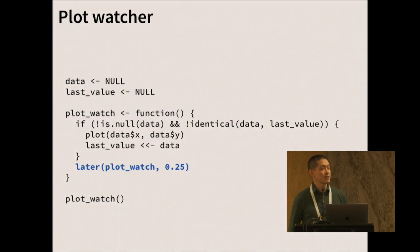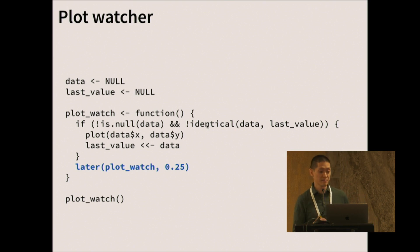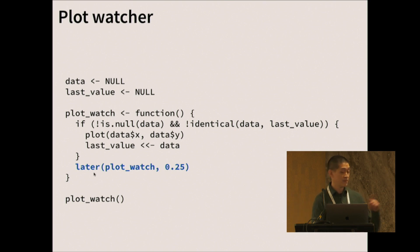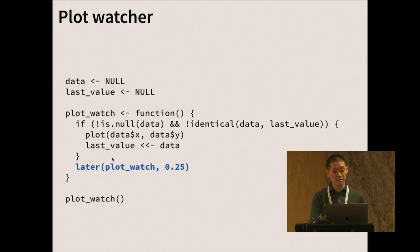That plot-watching code that you saw earlier — here's the code. It's pretty simple. I'm just setting data to null and last value to null. Then I have a function called plot_watch. If the data is not null and is different from the last value, it plots and updates the last value. The key difference is right here: I call later(plot_watch), so this function is rescheduling itself to run after a quarter second. After we define the function, we kick it off by invoking it once. It's a polling loop that runs every quarter second, and every time data changes, it executes the plotting code.